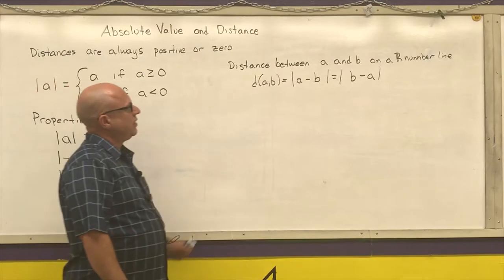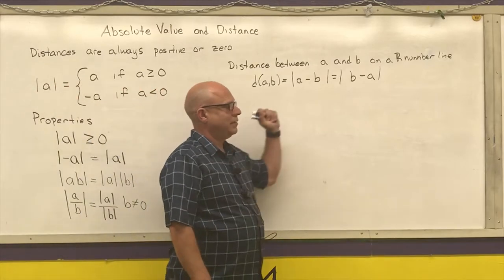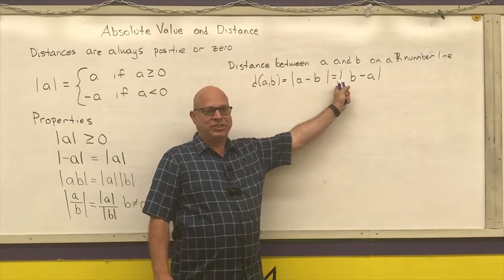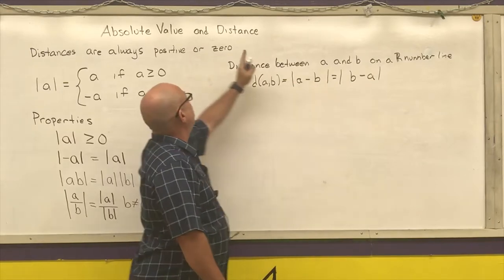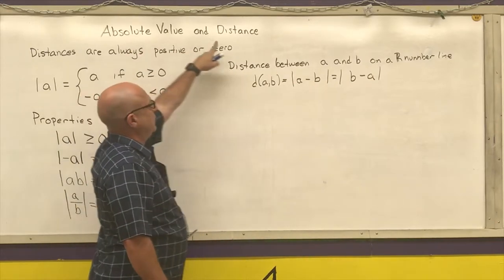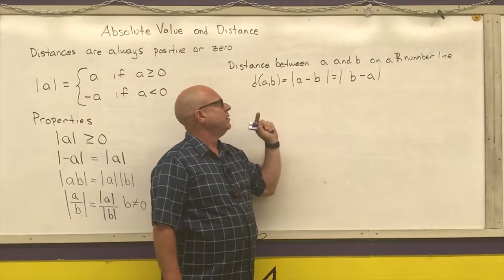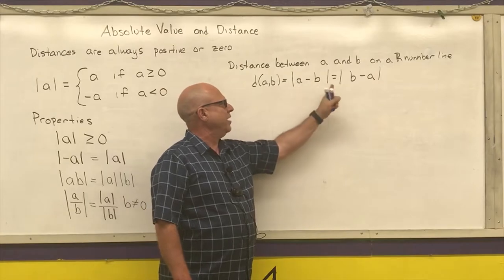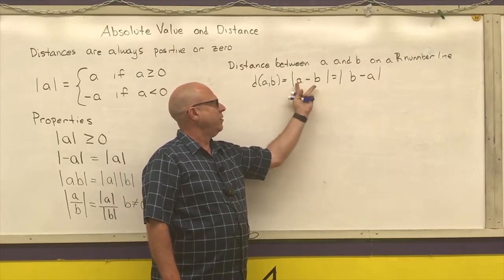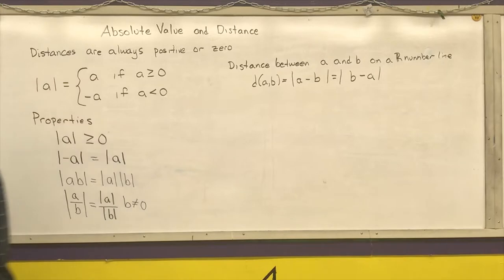And if you've already taken geometry class, this is our ruler postulate in the geometry class. It comes directly from the properties of absolute value and distance. The distance between two numbers on a number line is the absolute value of the difference of the coordinates of the two endpoints on that number line.